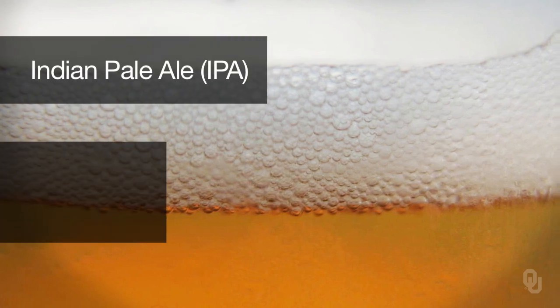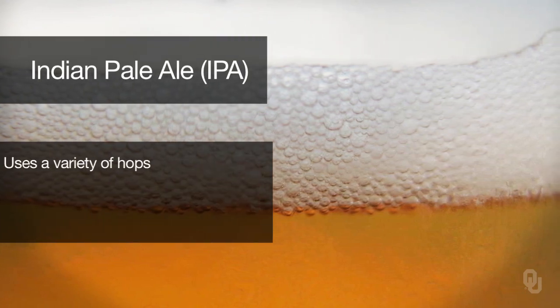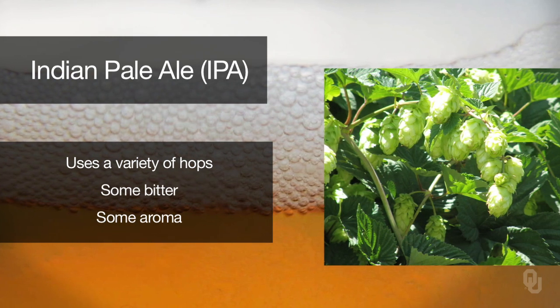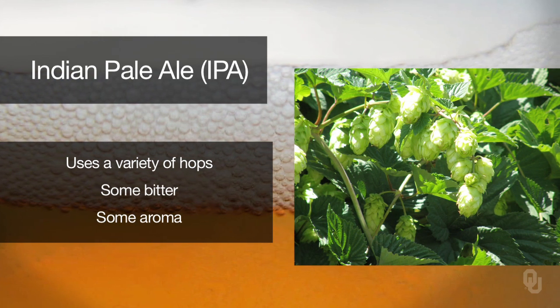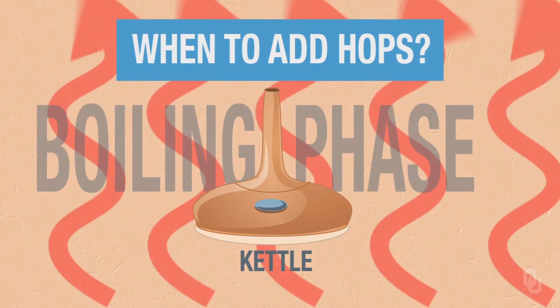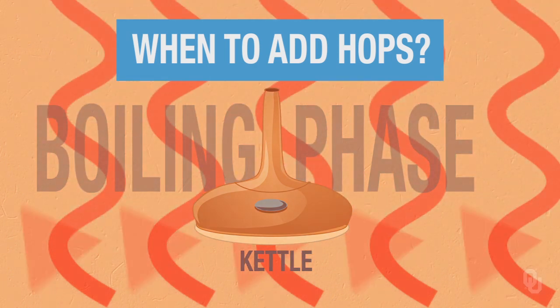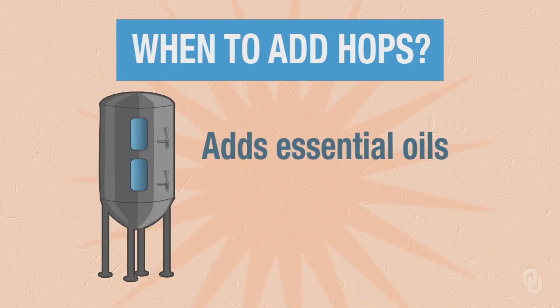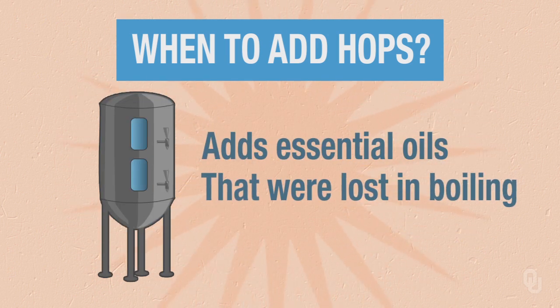If we think about a hoppy beer — something like an Indian pale ale or an IPA — there are several varieties of hops added: some bitter hops and some aroma hops. Often, to make sure that we get a nice aroma out of our beer, like in an IPA, we would want to add hops at the boiling phase, but also dry hopping, where we bring in the hops after the boil in the fermentation process to make sure we get a lot of those essential oils that may be boiled away during the boiling process.